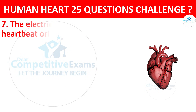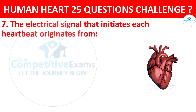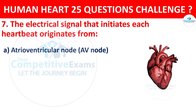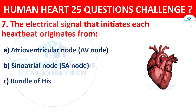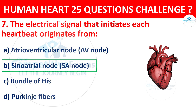Question number 7. The electrical signal that initiates each heartbeat originates from? Options: Atrioventricular node (AV node), Sinoatrial node (SA node), Bundle of His, or Purkinje fibers. Correct answer is B, that is Sinoatrial node.